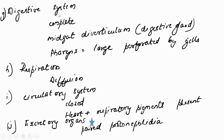Regarding the digestive system: it is complete — meaning it starts from the mouth and ends at the anus. It also has a midgut diverticulum, which is a digestive gland in Cephalochordates. Regarding the pharynx: it is very large and perforated by gills.